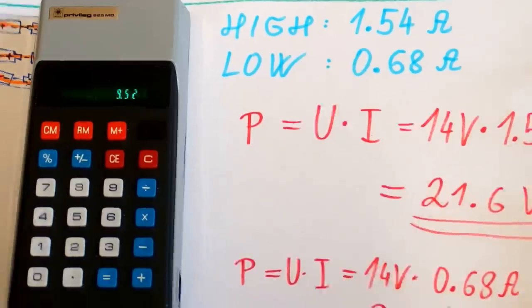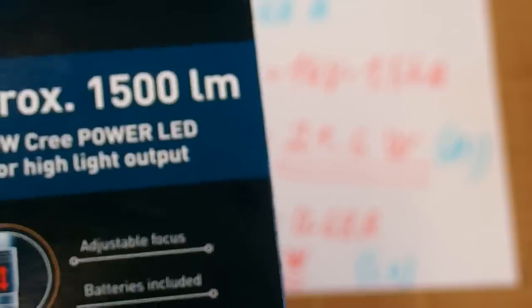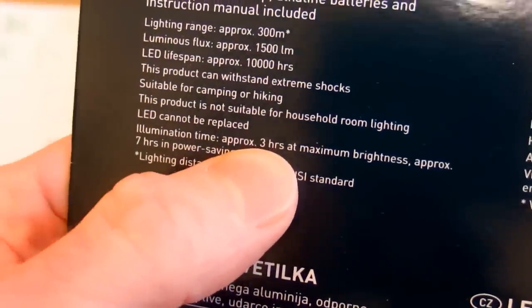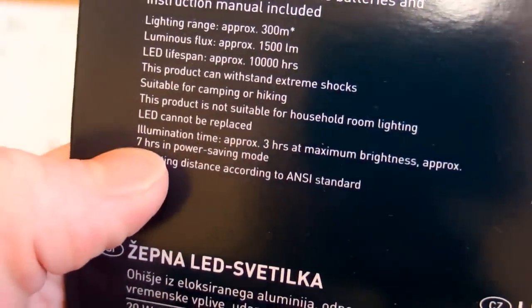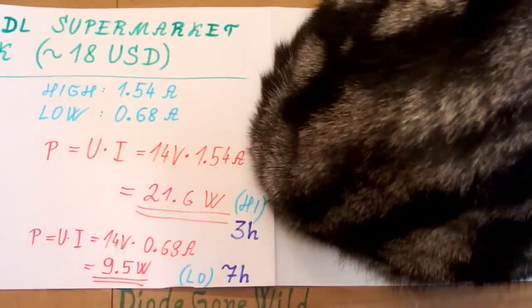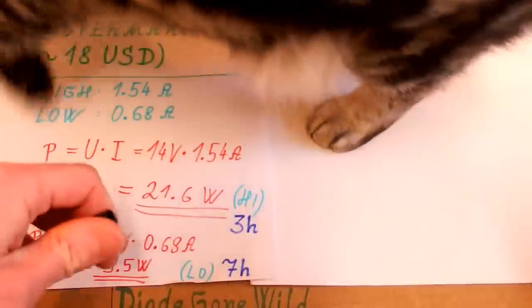So as you can see the power is quite high. It doesn't seem to be exaggerated when it says 20 watts. So here is my cat and the power of it is definitely not bad. The packaging also says that it can run for 3 hours at maximum or 7 hours at low power. And the cat is sitting on my paper. That's nice. So now let's calculate how much energy this requires.